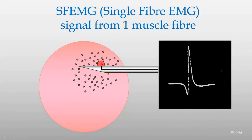Therefore a needle electrode was constructed with a much smaller recording surface. The selectivity was further increased by changing the amplifier filters so that signal components of low frequencies — namely those generated by more distant fibers — were restricted. All signal components below 500 Hz were suppressed. Now we get sharp signals with amplitudes from a few hundred microvolts up to many millivolts, depending on the position of the electrode in the muscle.